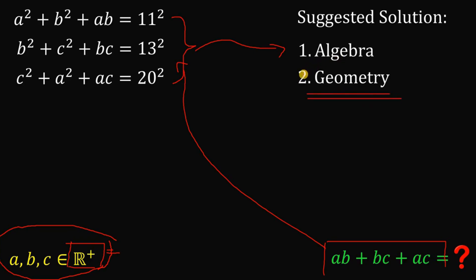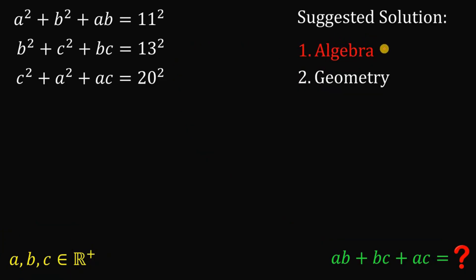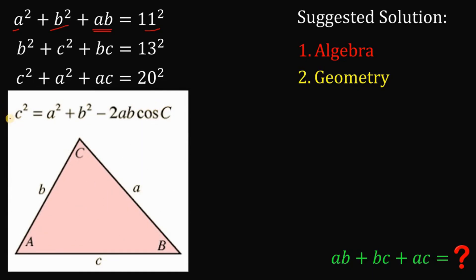Using algebra takes a lot of time to answer this kind of question, so let's eliminate that approach. Instead, I will show you the solution using geometry. Now, the question is: what concept in geometry do we need? We cannot use the Pythagorean theorem — although we have A squared plus B squared and C squared, there is an extra expression, AB. So the Pythagorean theorem is not helpful here. But aside from it, we also have what we call the cosine law.